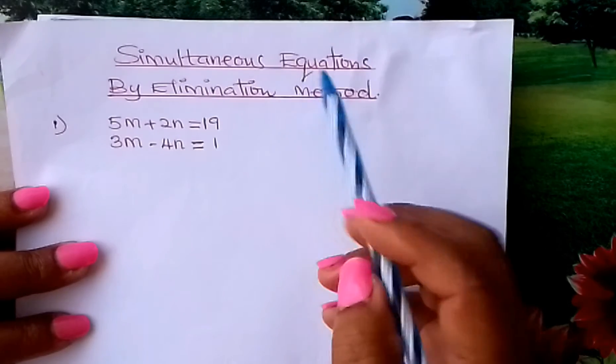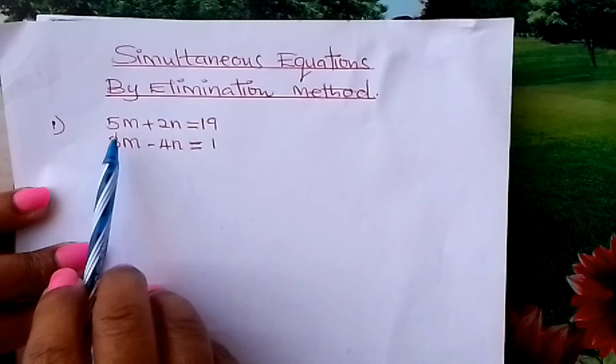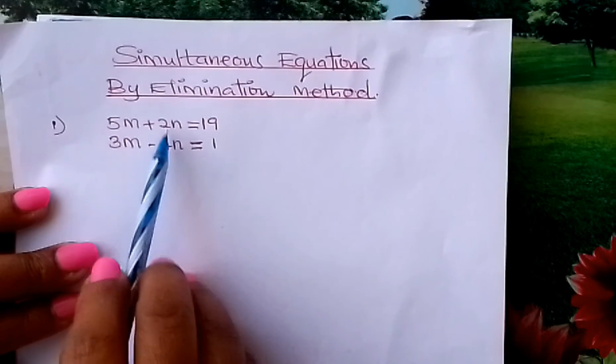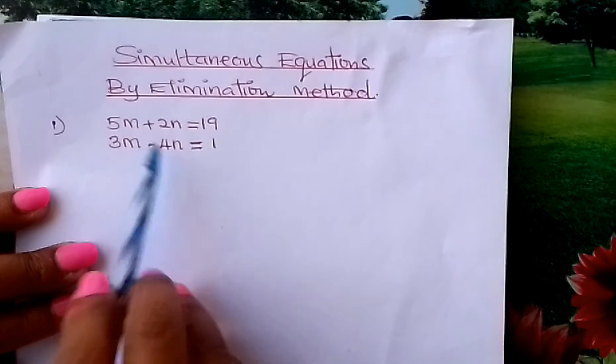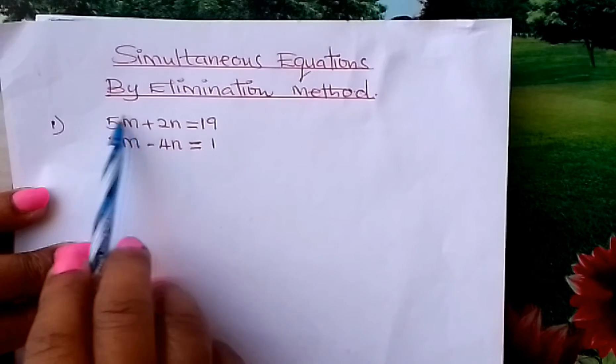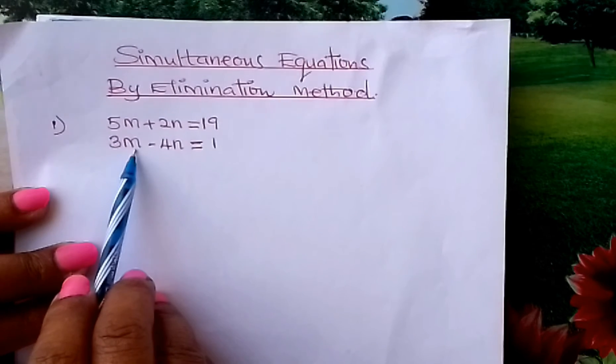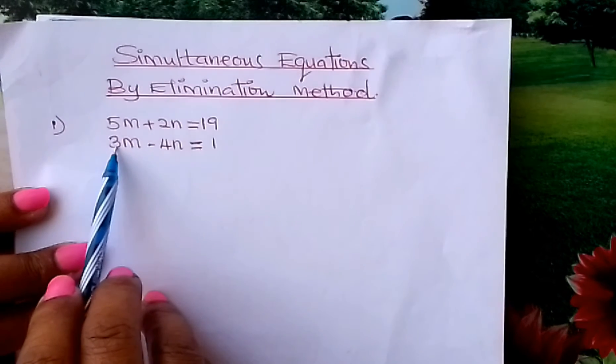By elimination method. What you do is look at the first terms or even the second. Let's consider the first terms here. We make the terms to be the same. This is 5M and this is 3M.